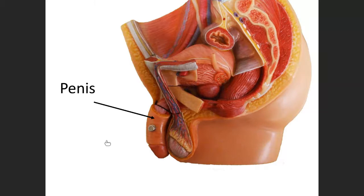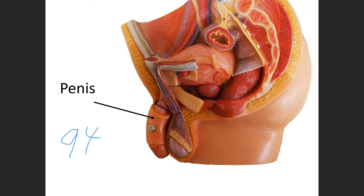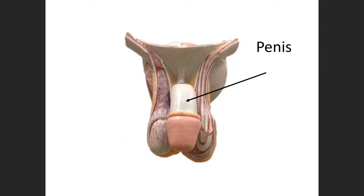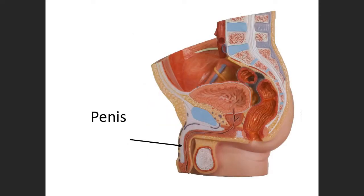Moving on to the reproductive system — external male genitalia. Here's the penis on this model. There are three or four different models, so you're going to see a couple different models. This is what we refer to as a mid-sagittal model — we cut it right down the middle. Behind the penis we can see one of the testicles, or the testes — located in the scrotum — and that is where we produce sperm.